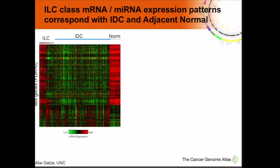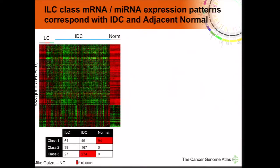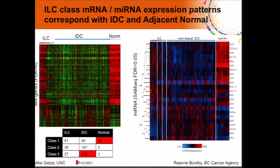Comparing these 988 dysregulated genes to ductal or normal-adjacent tissue revealed two key findings: class 1 has a very similar gene expression profile to normal-adjacent tissue, and ductal tumors have a profile similar to both class 2 and 3. Quantitatively, using the 90-gene centroid-based predictor, all 94 adjacent normal tissue samples are classified as class 1, while about 60 percent of ductal samples are classified as class 2. The same profile was seen with microRNA, where class 1 resembled adjacent normal tissue and class 2 and 3 resembled ductal tumors, with a reduction in microRNA expression in class 3.